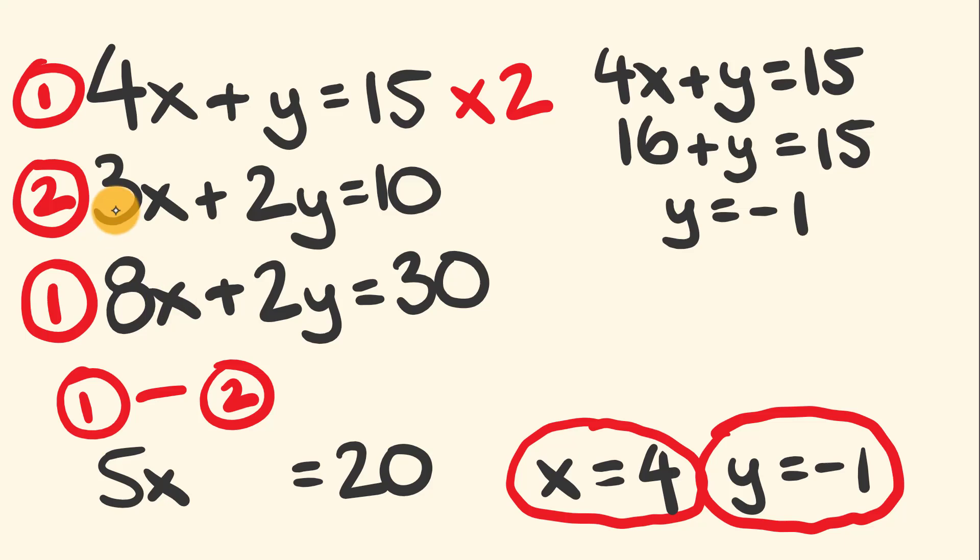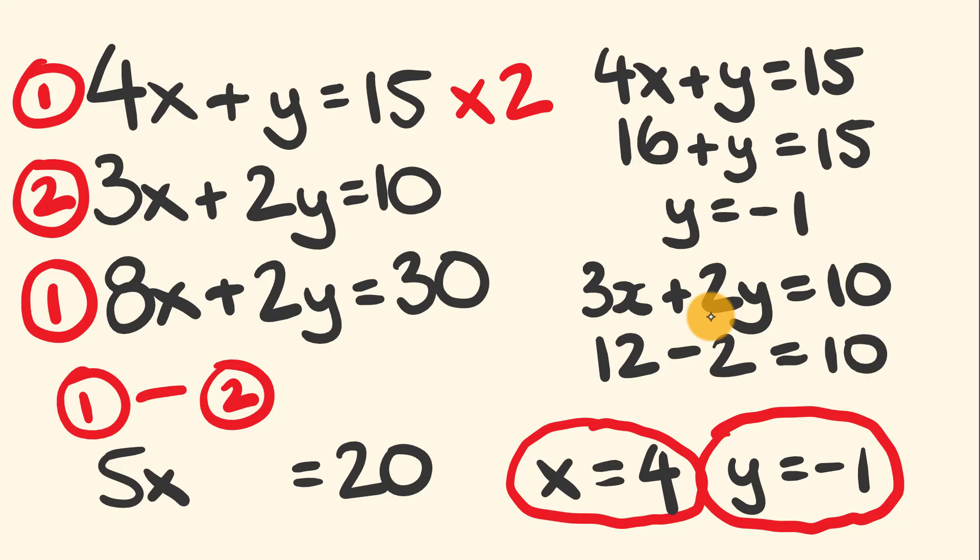We're going to substitute our x and y values into the second equation: 3x plus 2y equals 10. Let's substitute in. 3x, with x equals 4, equals 12. We have y equals negative 1, so 2y is negative 2. This equals 10. 12 take away 2 is indeed 10. We've checked it and got the right answer.